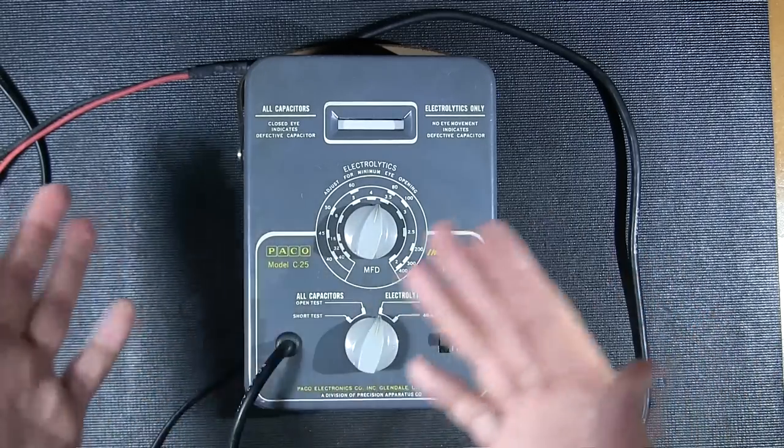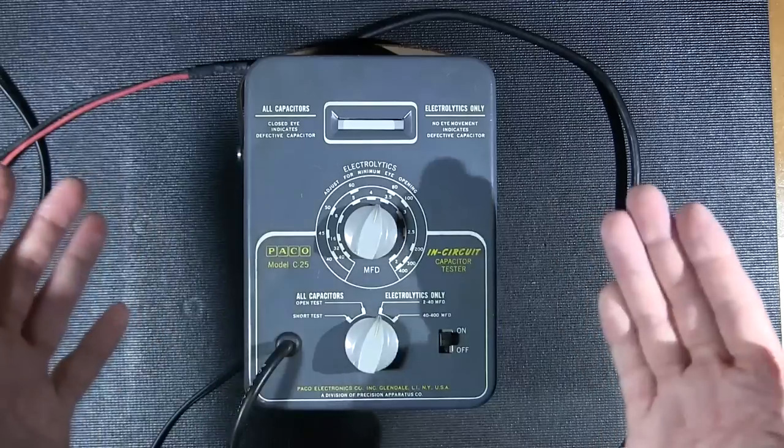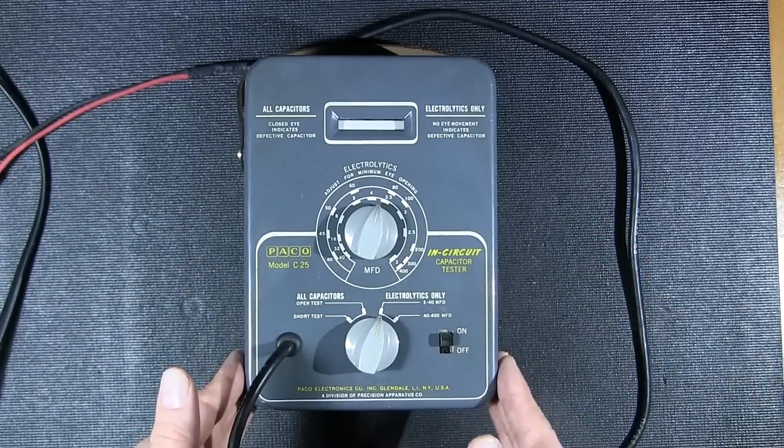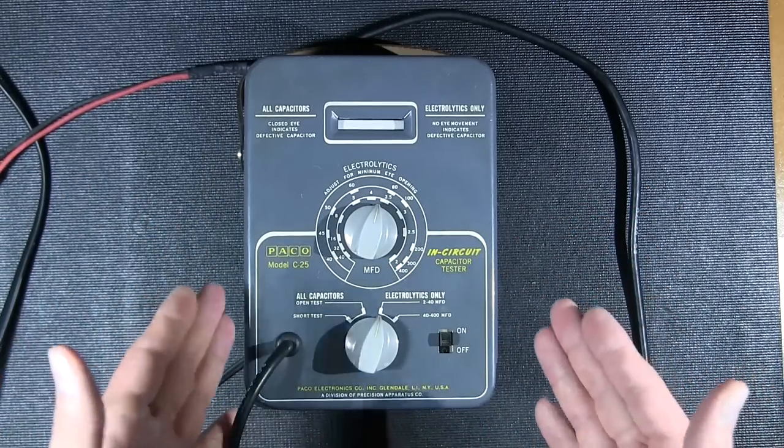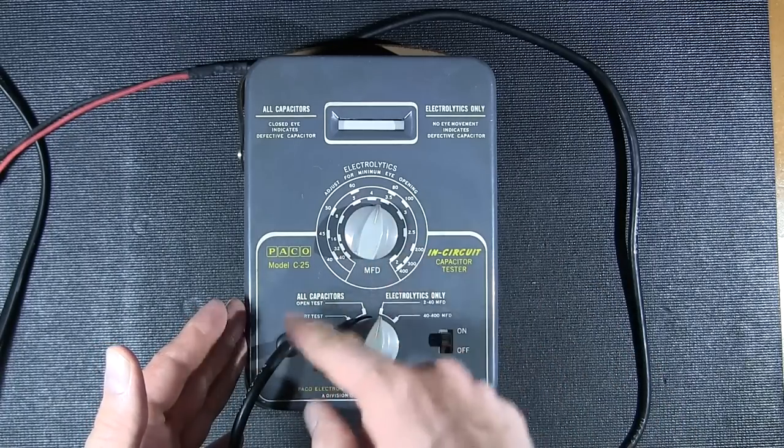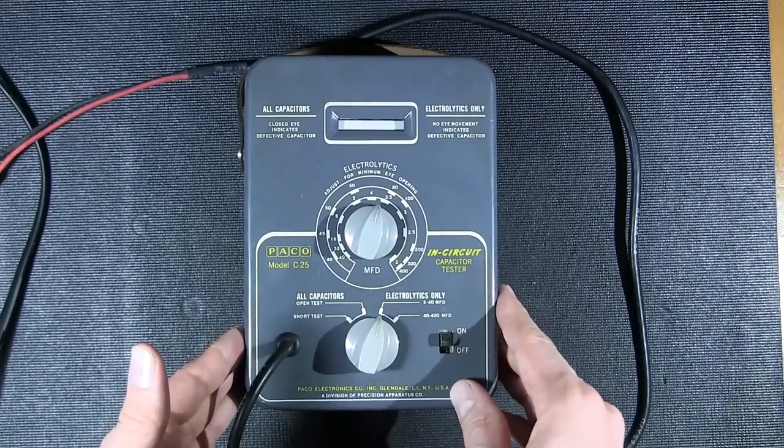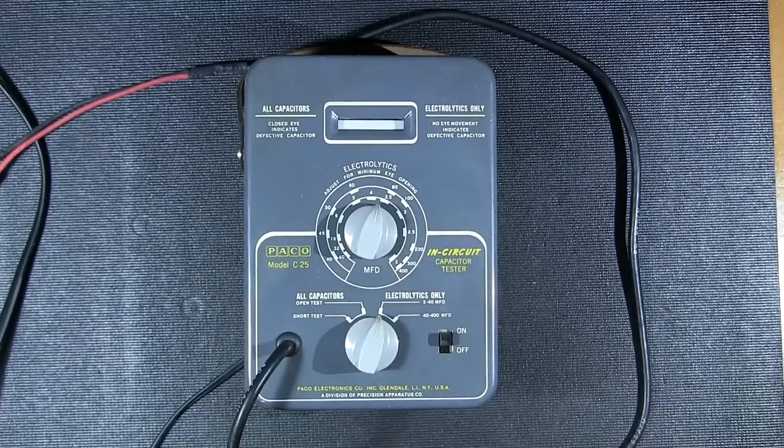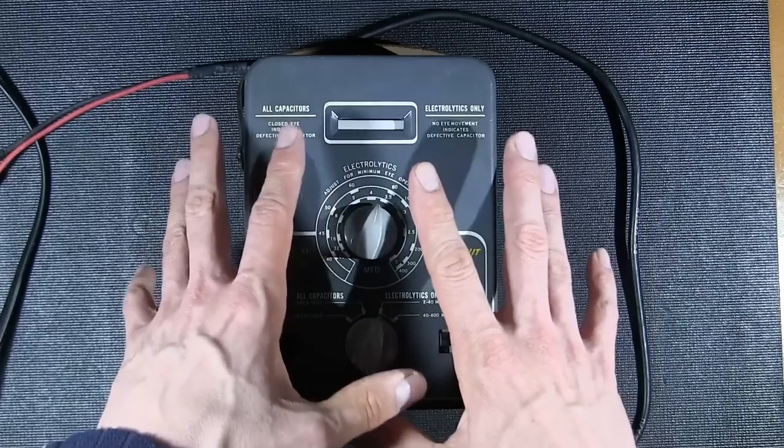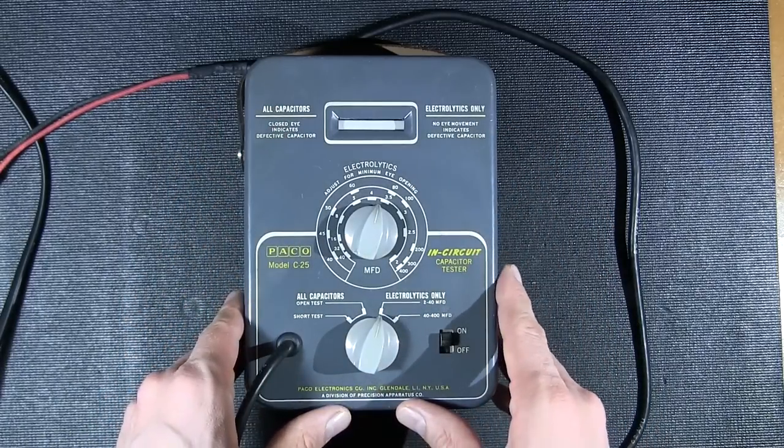This really is not going to indicate leakage and that's a very important thing to be looking for nowadays because the capacitors in these older amplifiers and radios and televisions are developing leakage by now because they're breaking down inside. Again this is looking for extremes, either a short or an open capacitor. You're not going to be able to test that leakage. That is the con to this particular capacitor tester.